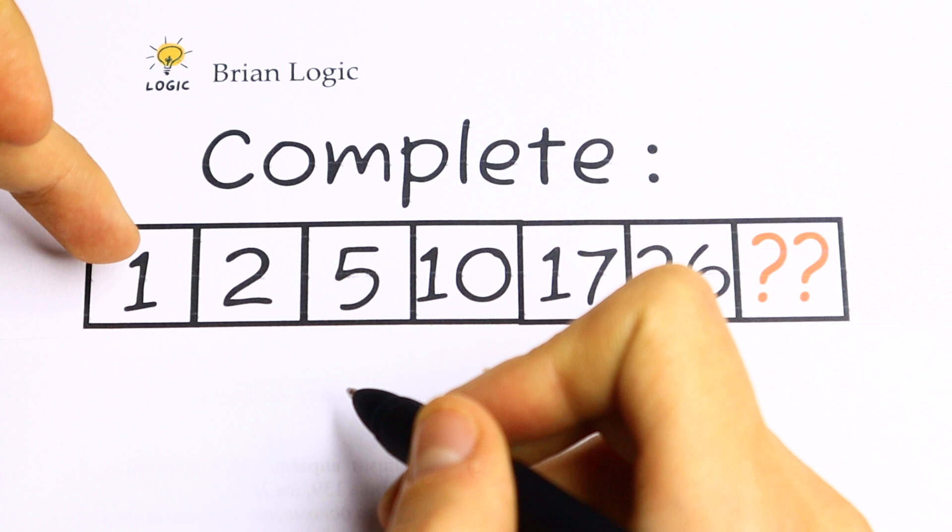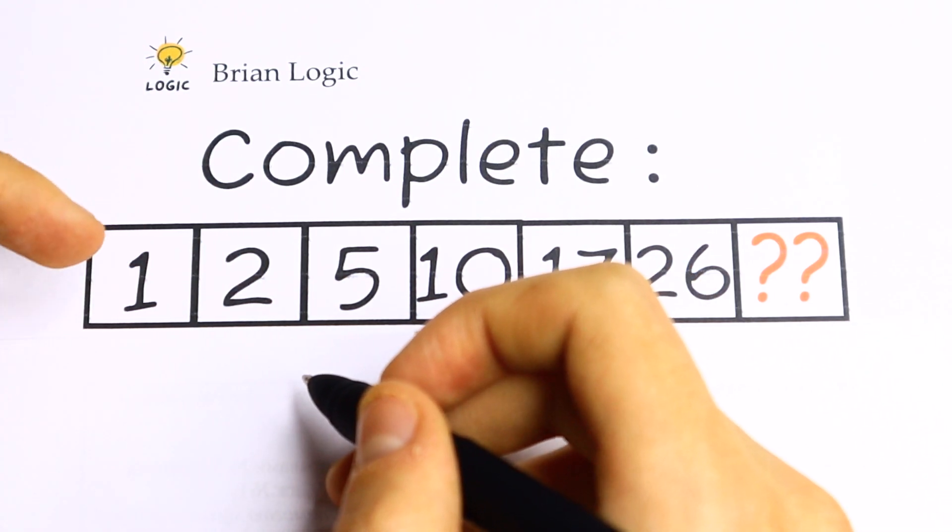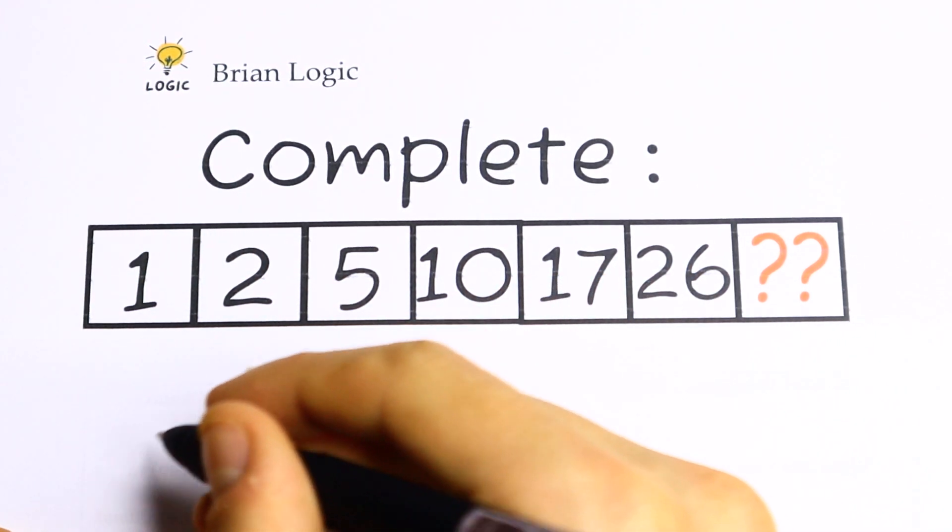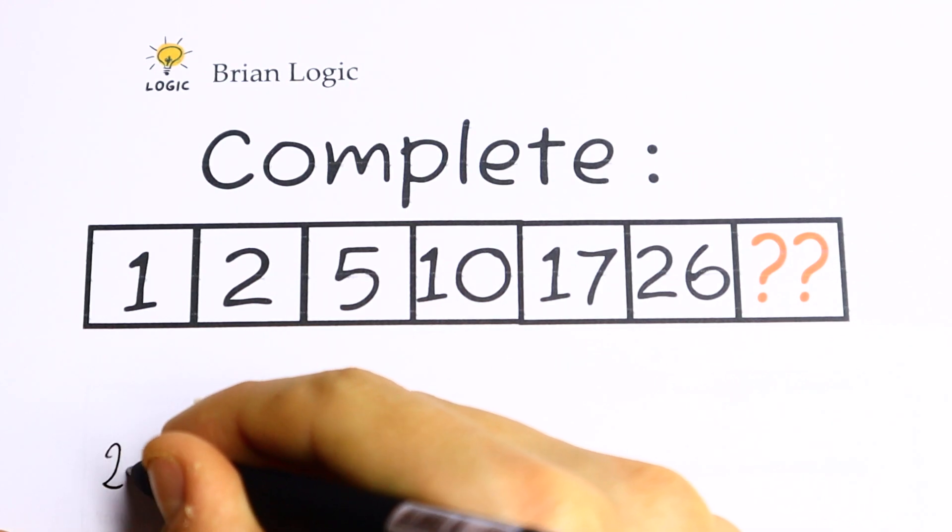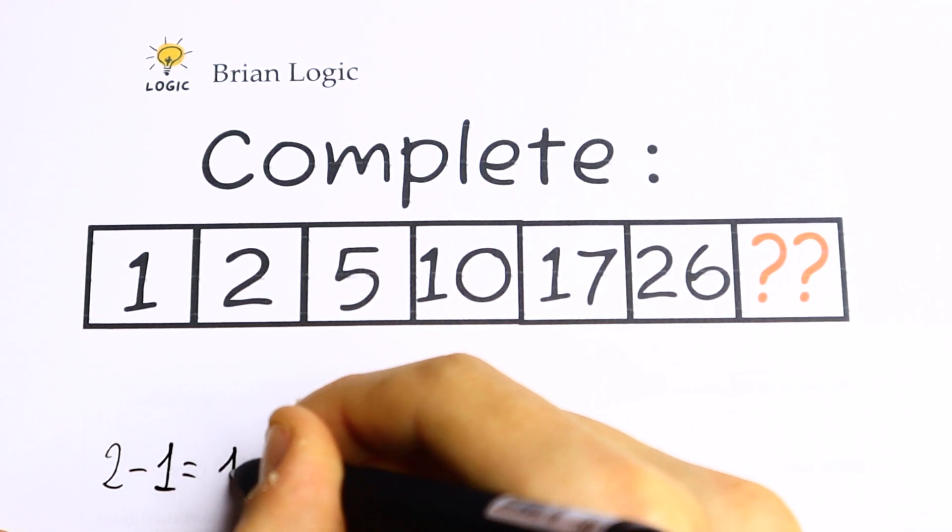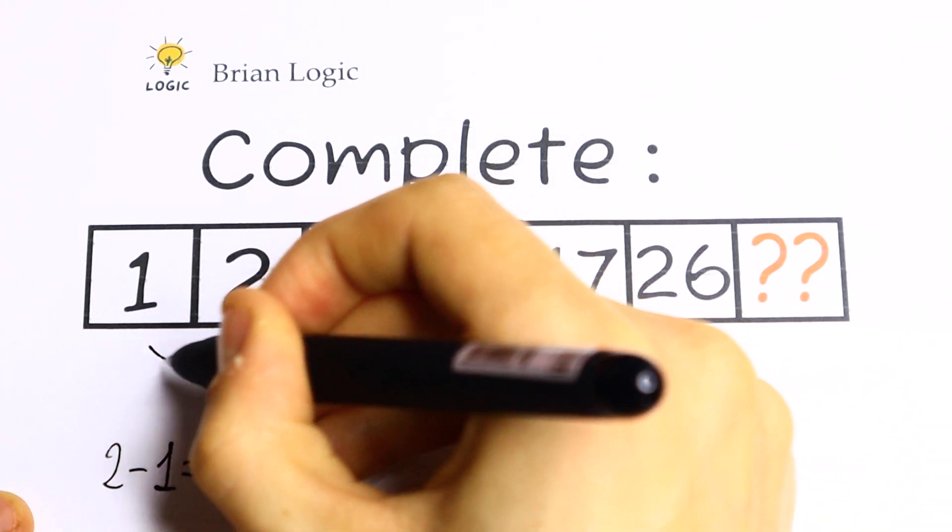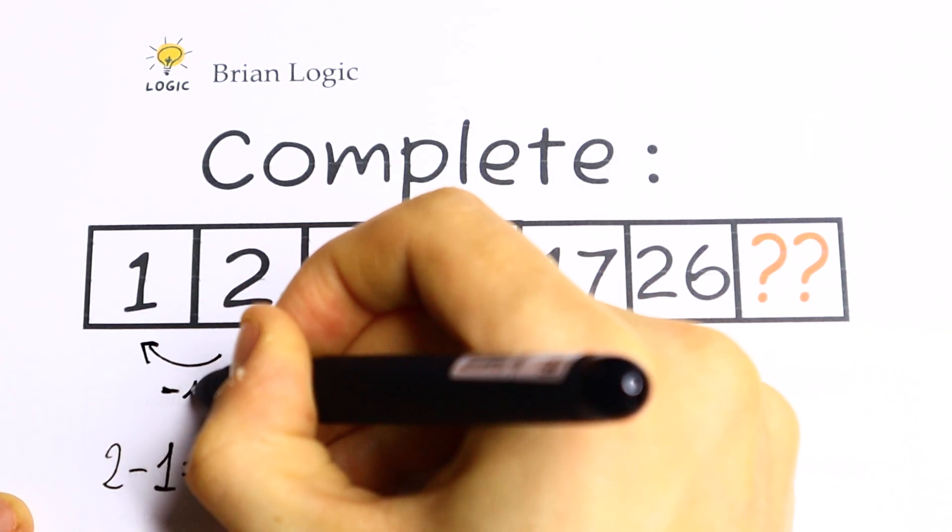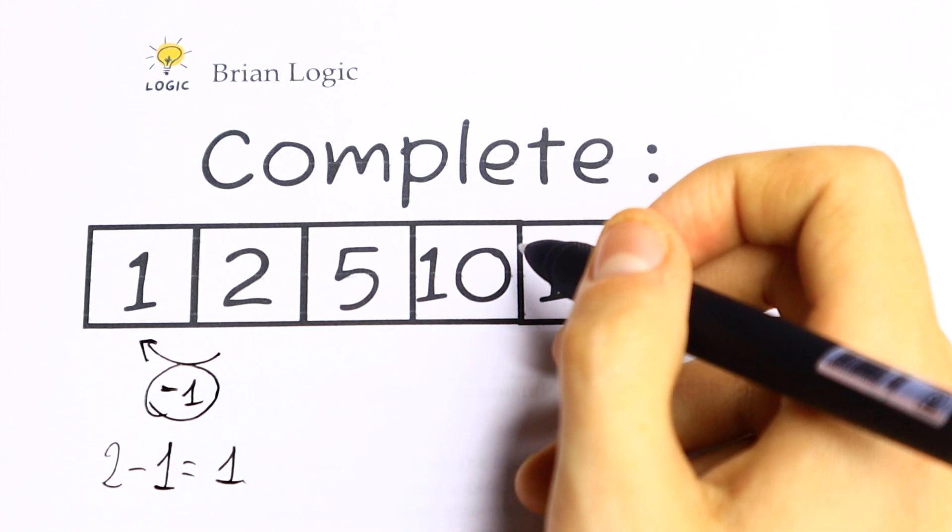If we subtract from these two the first number, so let's subtract the next one by the previous one. So we will have 2 minus 1, it will be equal to 1. So we need to subtract 1 to get this first number.